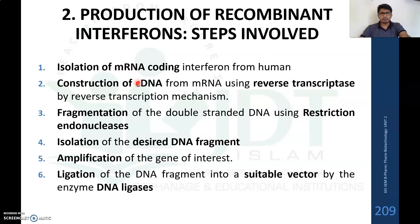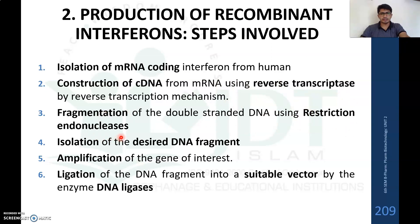The steps involved in recombinant interferon production: Step 1 is isolating the mRNA coding for interferon from humans. Step 2 is constructing complementary DNA (cDNA) from the isolated mRNA using reverse transcriptase enzyme by reverse transcription. The resulting double-stranded cDNA is then fragmented using restriction endonuclease enzyme to obtain the desired DNA fragment.